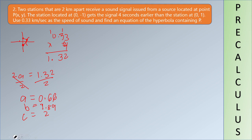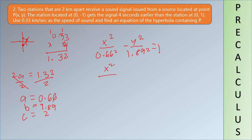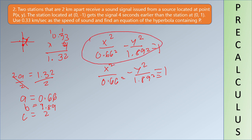For the next step, we're going to use the hyperbola equation. It's x squared over 0.566 squared minus y squared over 1.89 squared equals 1. So x squared over 0.666 squared — that's the equation. Alright, that's it. Thank you very much.